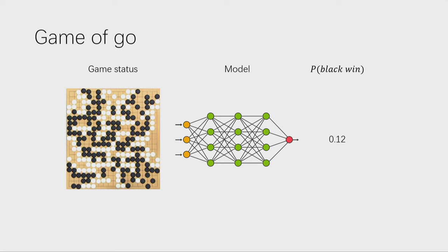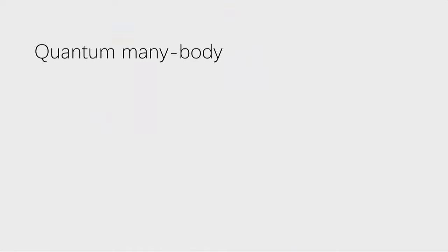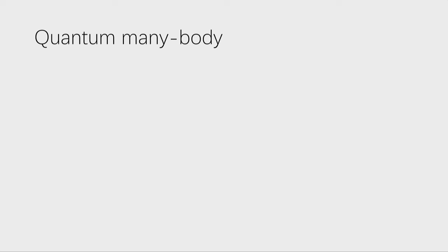Here I want to give another example about the game of Go. You have probably heard of AlphaGo. One thing we can do with a neural network is take the game status in the game of Go and put it into the network, which will then tell us how likely the player is going to win the game. If you are familiar with Go, you may know it is a very long-range entangled game — placing pieces in one corner can significantly influence the game in other corners. This is a bit similar to some quantum systems like quantum spin liquids.